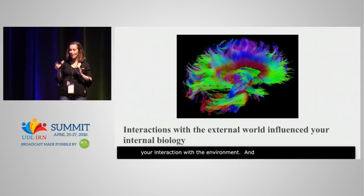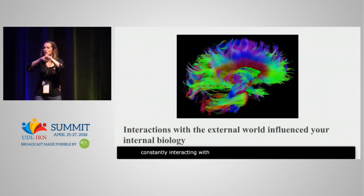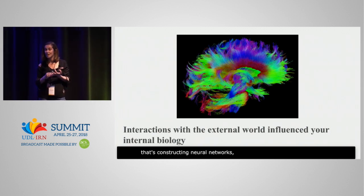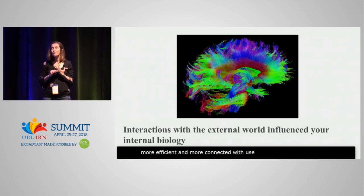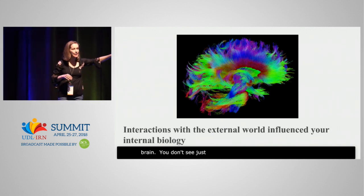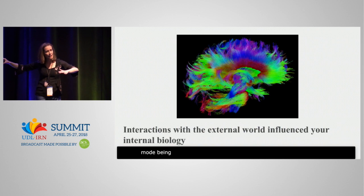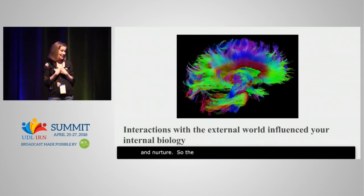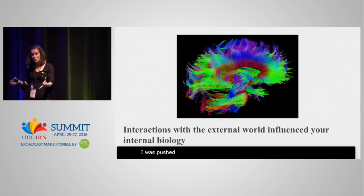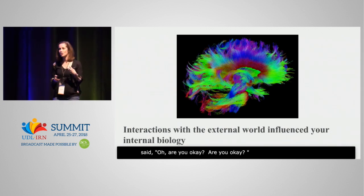What this means is that our interactions with the external world influence your internal biology. We're not isolated — we're constantly interacting with the environment, and that's constructing neural networks that become more efficient and more connected with use and over time. One of the most remarkable things that brain science has shown us is it uses all of our brain. You don't see just a right hemisphere being used, you don't see just a particular learning style or mode being used, but your entire brain is being used. It's a really unique combination of nature and nurture. The first time I experienced a dog, I was pushed over and frantic parents ran over and said, 'Oh, are you okay?' So every experience that we have in our environment starts to construct our neural networks.